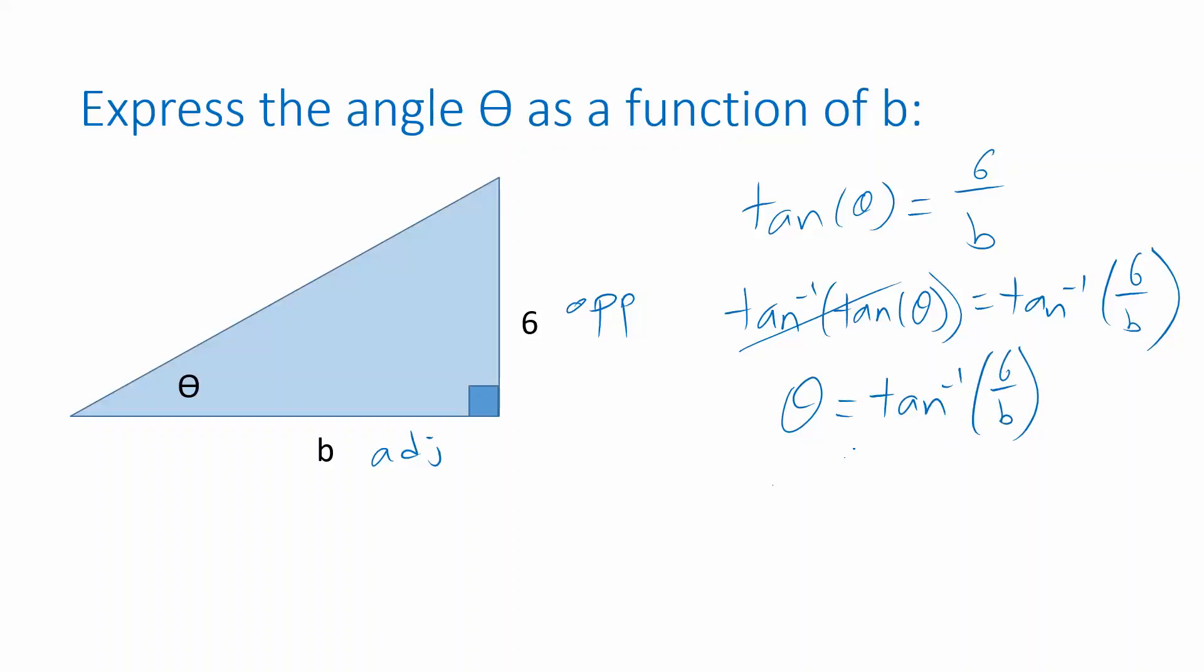I'm indicating here that we're expressing things in radians because there's no indication of degrees. However, the same formula would work if we wanted an answer in degrees. We would just interpret the inverse function in degrees, making sure our calculator was in the correct mode if we plugged in a value for b.